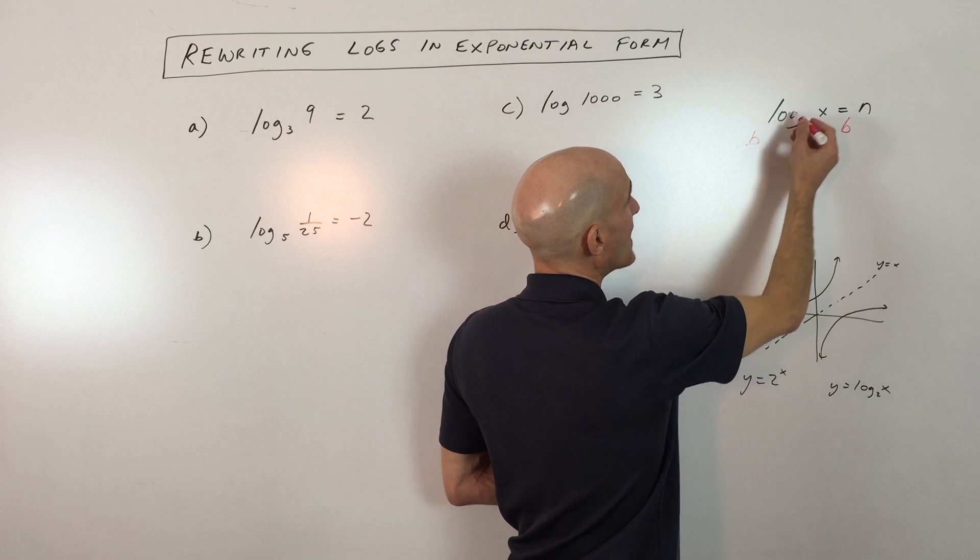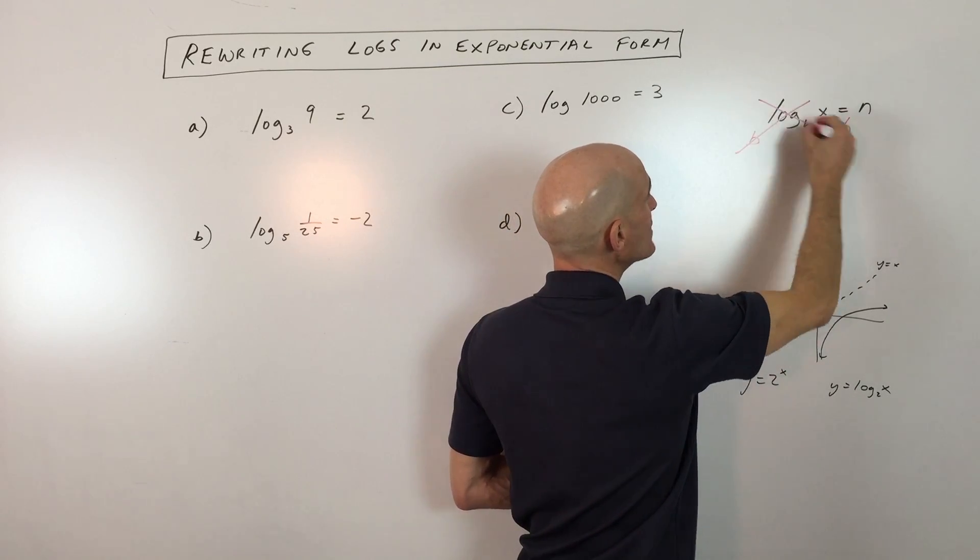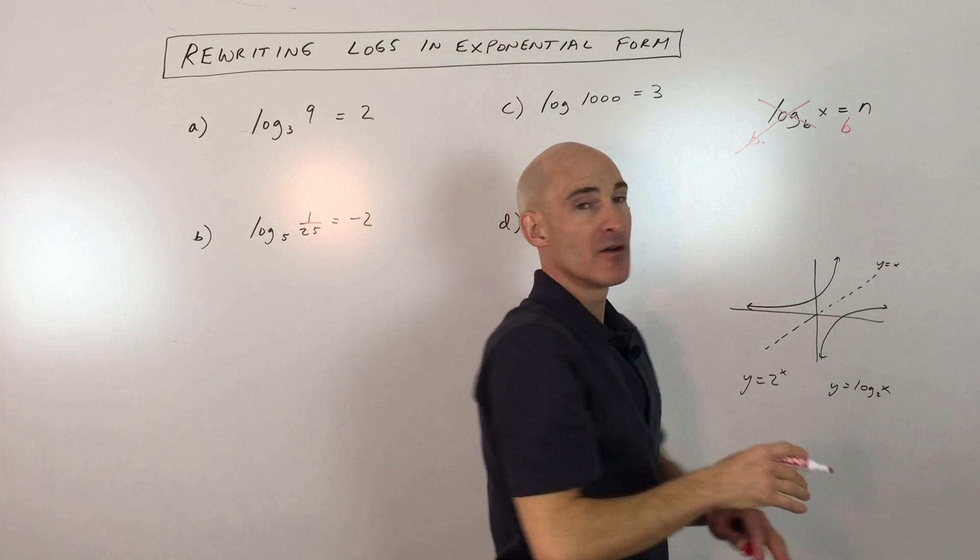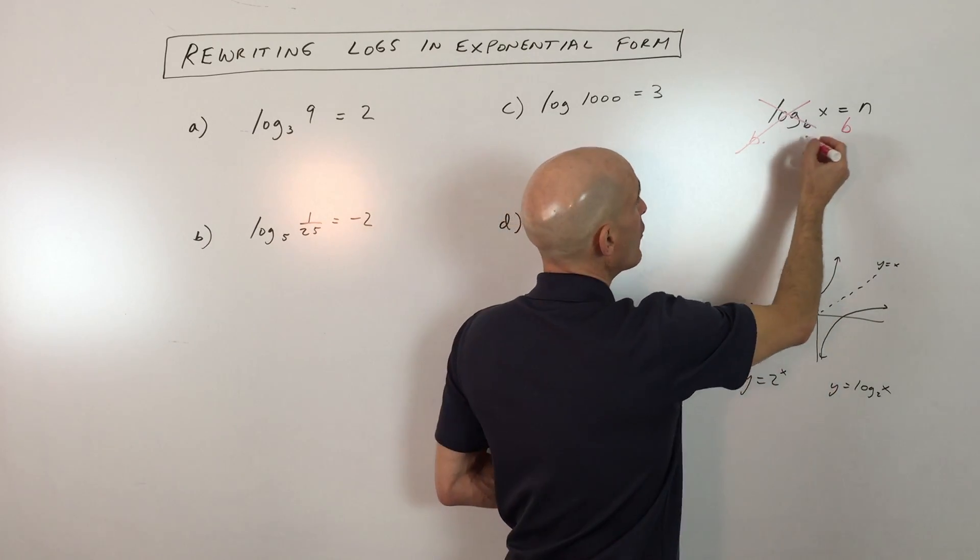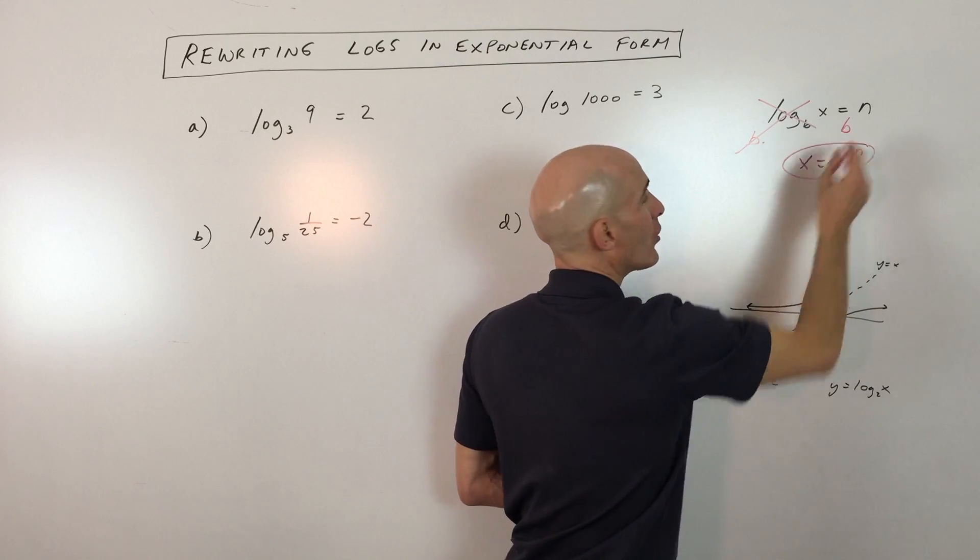Now exponential functions and logarithmic functions, these are inverses. As long as the bases are the same, they're going to undo one another. So we end up with x equals b to the n.